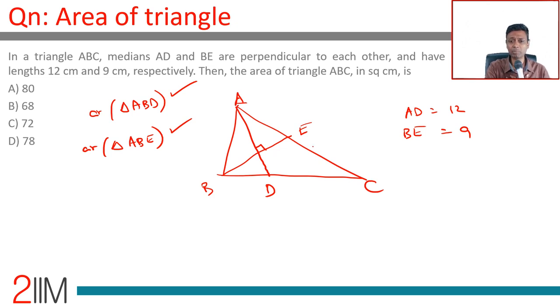AD is 12, BE is 9. Look at this: this is the meeting point of these two medians, the centroid. It's a delightful insight—the moment you know that, you're through. The centroid divides the median in the ratio 2:1. That means AD is 12, so AG is 8 and GD is 4. BE is 9, so this is 6 and this is 3.